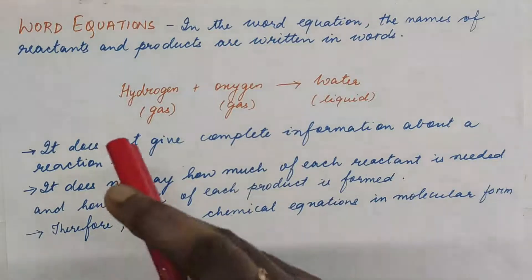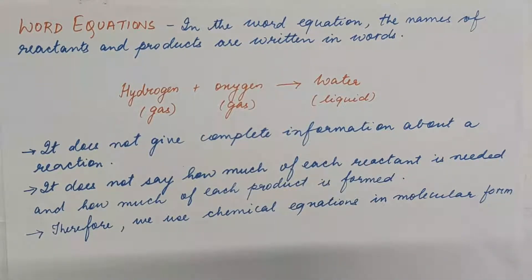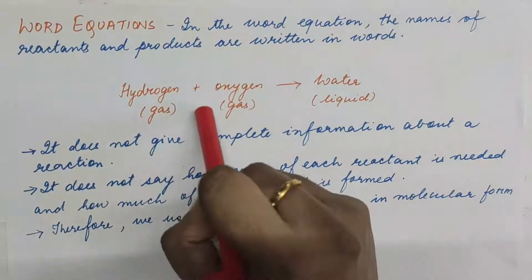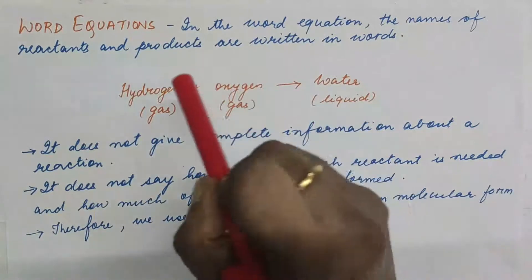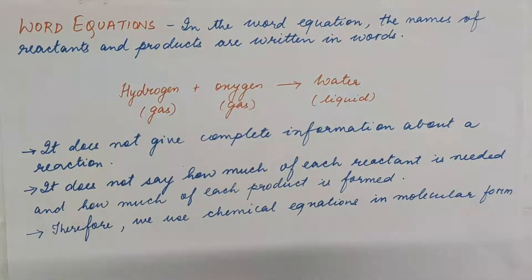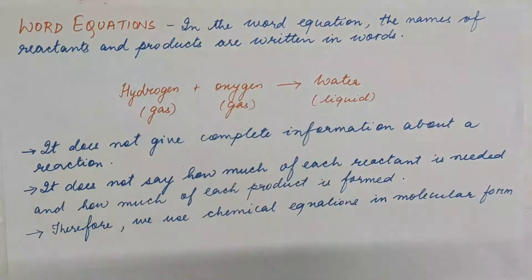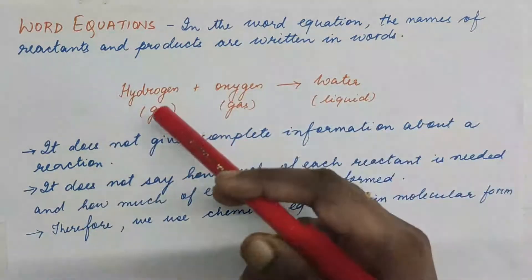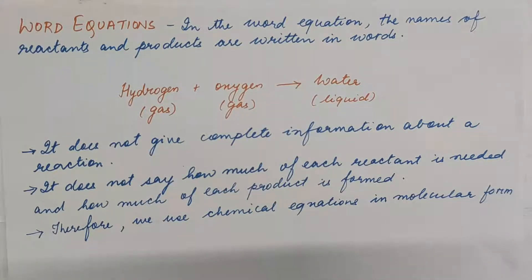For example, hydrogen gas is reacting with oxygen gas and yielding water, which is a liquid. The reactants are separated with a plus sign, and the reactants and product are separated by an arrow. The reactants are written on the left-hand side and the products on the right-hand side. If we have more than one product, we also use a plus sign to separate them. In a word equation or chemical equation, we can also write the physical state of the reactants and products.